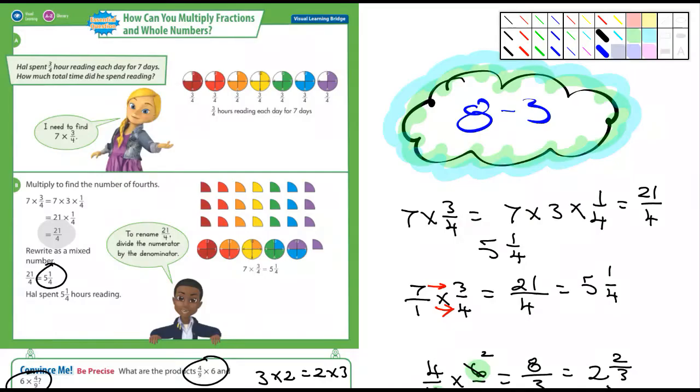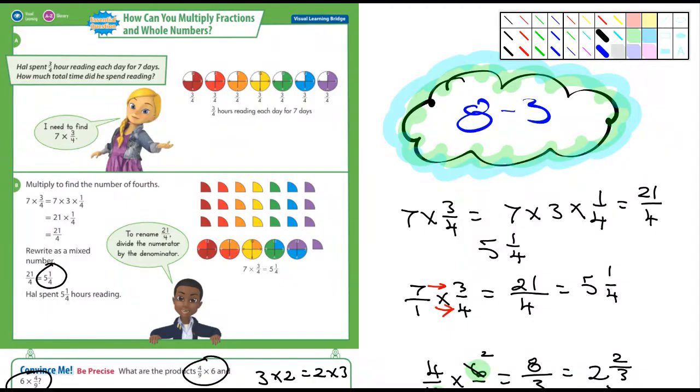And I actually ended up doing that particular problem over here. And I did it the way they, one way they show you, which is multiplying 3, I'm sorry, 7 times 3 and then those times 1 quarter. And that's what they did here. 7 times 3 and those times 1 quarter. And you'd end up with 21 over 4.